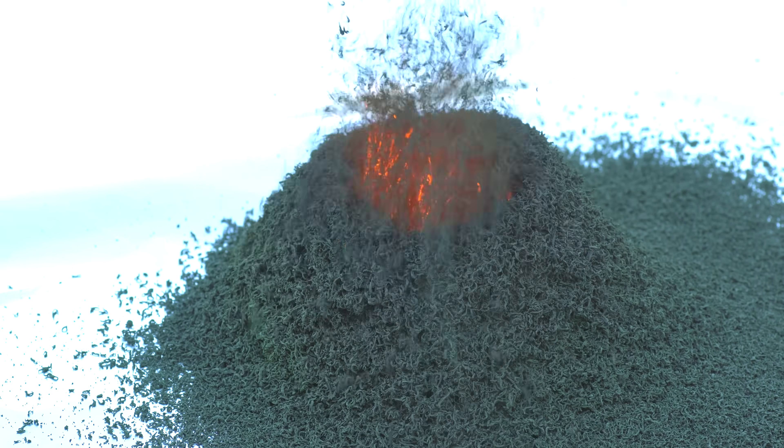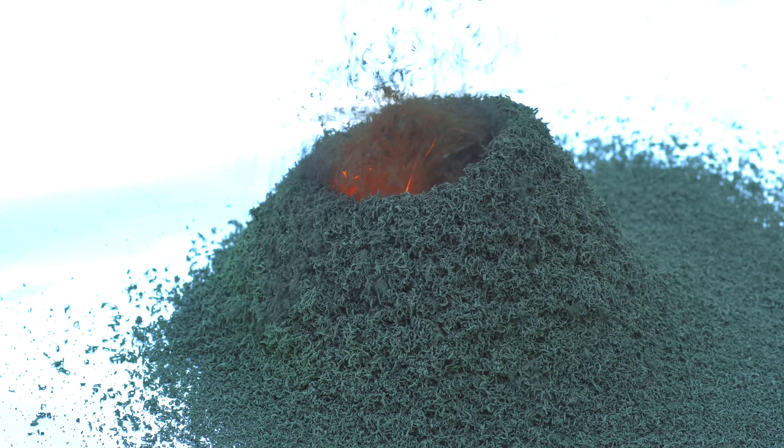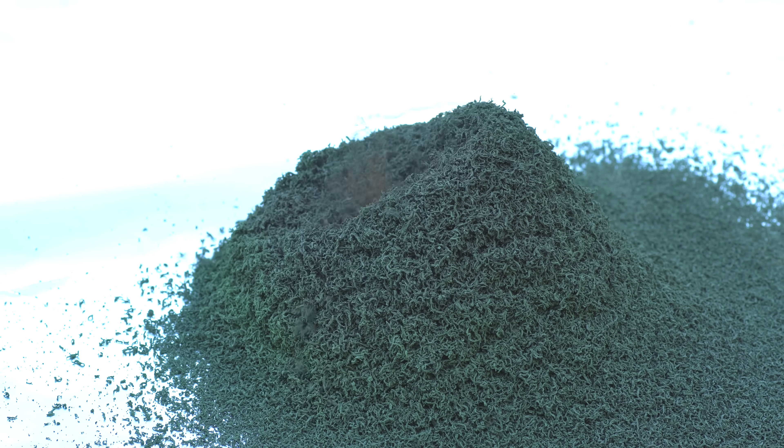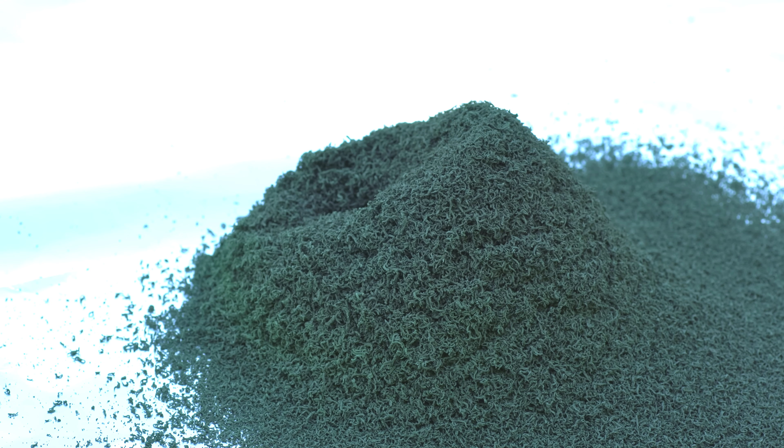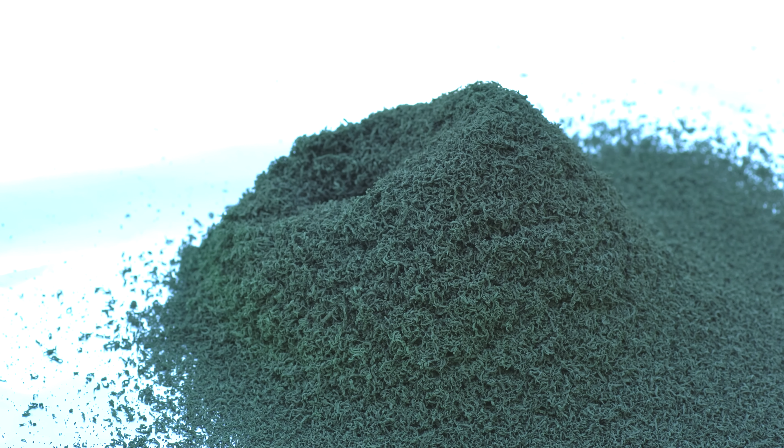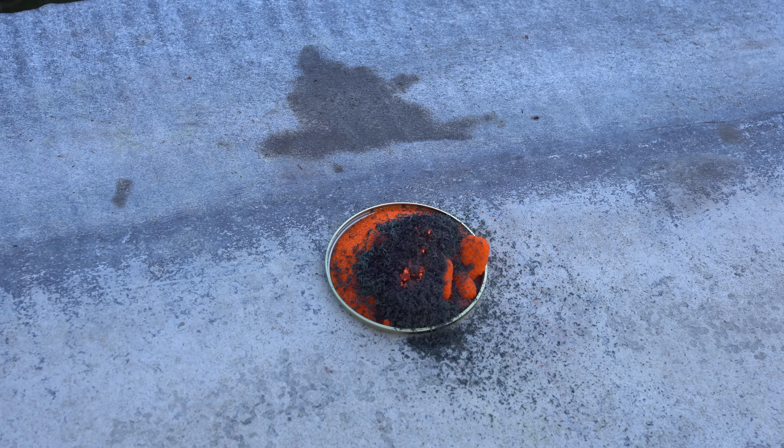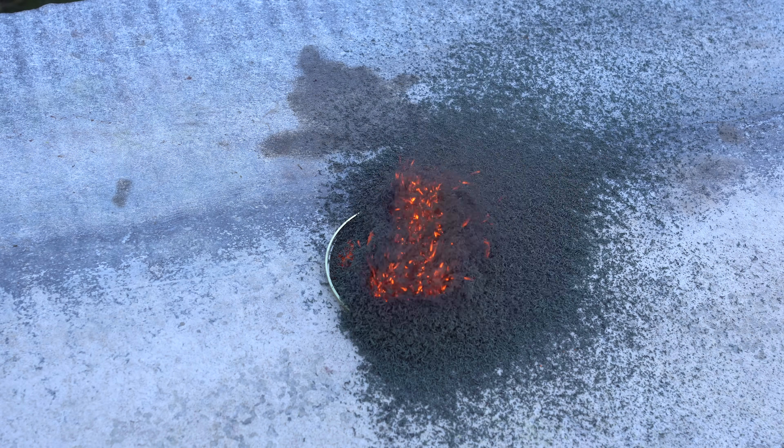it might seem that this green substance is being formed just out of nowhere. I'm sorry to disappoint you, but there are no miracles. Chromium oxide simply forms with nitrogen and water vapor, that are also formed during this reaction. As a result, from a small amount of ammonium dichromate,